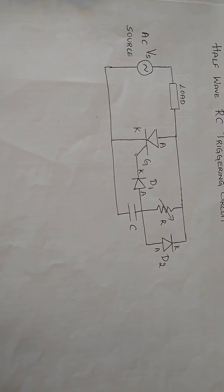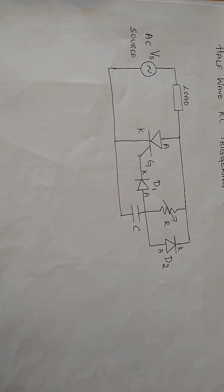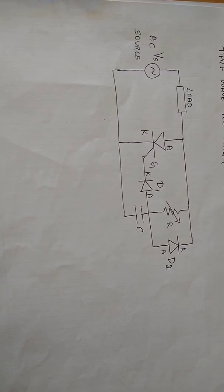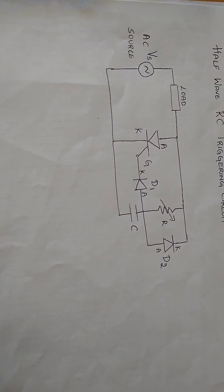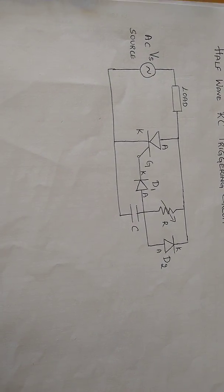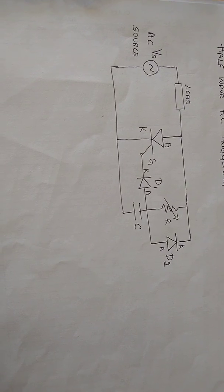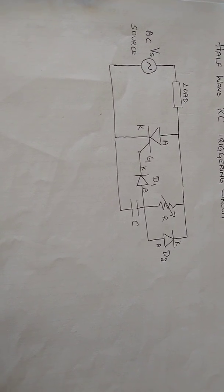In the negative half cycle, the capacitor C charges up to the negative peak value through the diode. Diode D1 is used to prevent the reverse breakdown of the gate cathode junction in the negative half cycle.